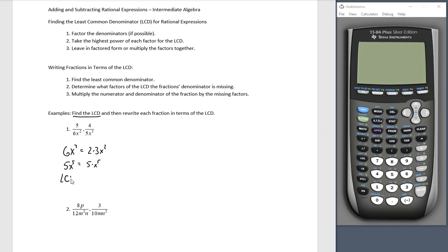This tells me my LCD. Factor the denominators done. Take the highest power of each factor. So 2, there's only one 2, so I need that. 3, there's only one 3, so I need that. x to the fifth and x squared, which one's the highest power? x to the fifth is the highest power. Two times three is 6, six times five is 30. So 30x to the fifth will be the LCD.